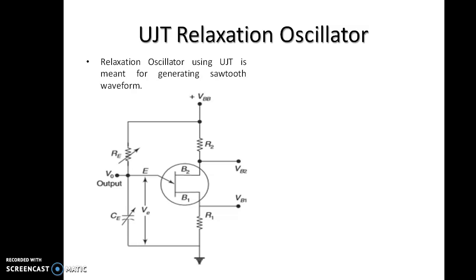This is the circuit diagram of UJT relaxation oscillator. It consists of a UJT, a capacitor CE which is charged through the resistance RE. When the supply voltage VBB is switched on, the voltage across the capacitor increases exponentially. When it reaches the peak point voltage VP, where VP is eta VBB plus V gamma, where V gamma is the cutting voltage of the diode.